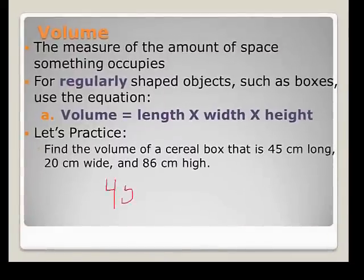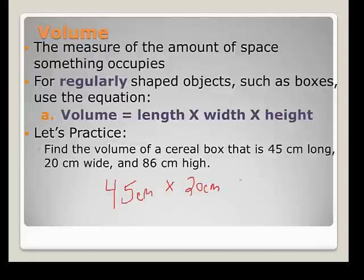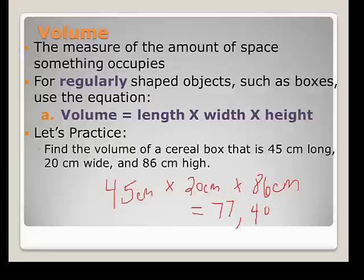We are just going to multiply all three of these numbers together. Please, whenever you're doing calculations like this, you need to get in the habit of writing down every single unit right after the number. So I have 45 centimeters, 20 centimeters, 86 centimeters. I'm going to take 45 times 20 times 86. I get 77,400. And because this is centimeters times centimeters times centimeters, this is actually centimeters cubed. And if you ask me if you can use the calculator, I will always say yes.